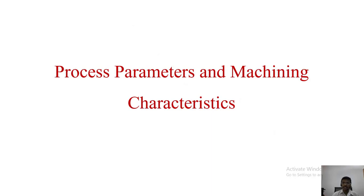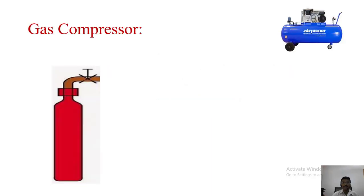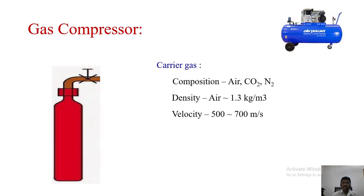Let me see the process parameters and machining characteristics of AJM. For the compressor, the source is air or carbon dioxide or nitrogen. Density is 1.3 kg per meter cube. Velocity is 500 to 700 meter per second. Pressure is 2 to 10 bar for cutting the object. Flow rate will be 5 to 30 liters per minute, and life is 10 to 300 hours.